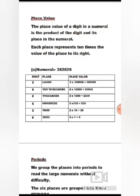Here the numeral is 3,82,526 and you have to write the place and place value of different digits. Place of 3 is lakhs and its place value is 3 × 1 lakh = 3 lakhs. Place of 8 is ten-thousands and its place value is 8 × 10,000 = 80,000. Place of 2 is thousands and its place value is 2 × 1,000 = 2,000. Place of 5 is hundreds and its place value is 5 × 100 = 500. Place of 2 is tens and its place value is 2 × 10 = 20. Place of 6 is ones and its place value is 6 × 1 = 6.